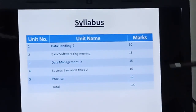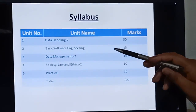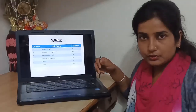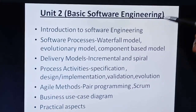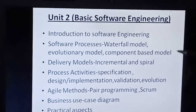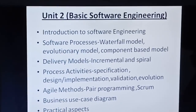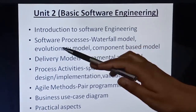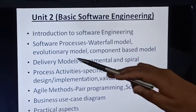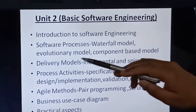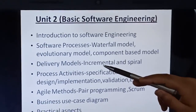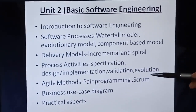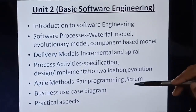Let's discuss unit 2, because unit 4 we have already done in school and unit 2 we will start now. I am going to give you the introduction of unit 2 in this video. Unit 2 is Basic Software Engineering, or BSE. It will cover several points related to software engineering and development of software. We will cover introduction to software engineering, software processes, and 3 models: waterfall model, evolutionary model, and component-based model. Next will be delivery models covering incremental and spiral models. Next are process activities like specification, design, implementation, validation, and evolution. Next will be agile methods, pair programming, and Scrum.